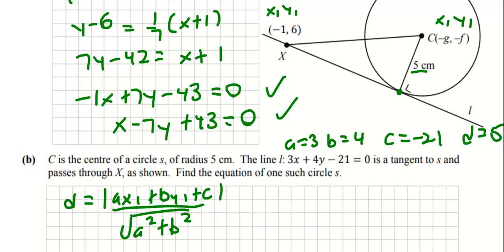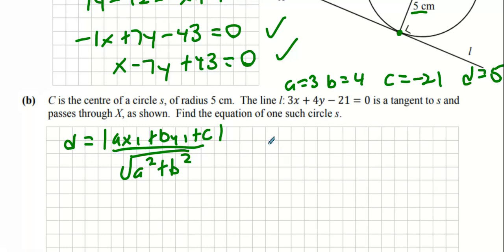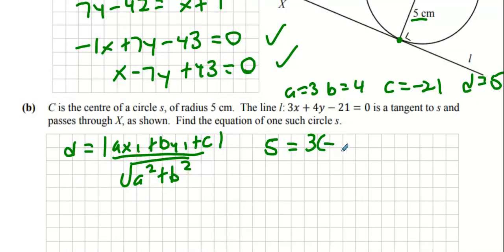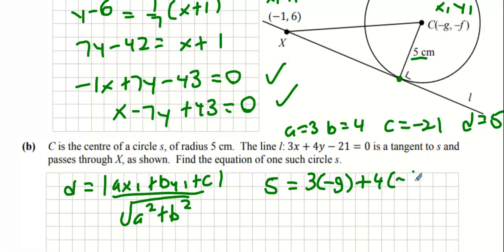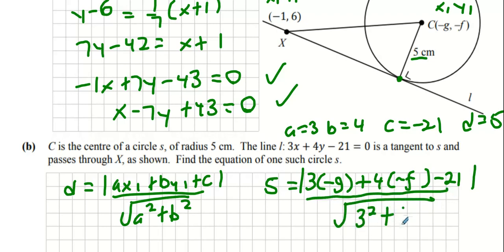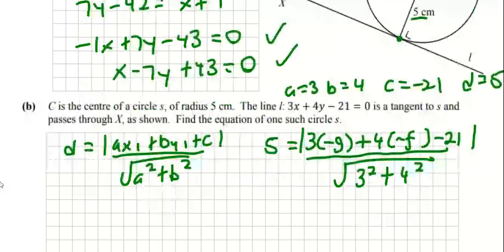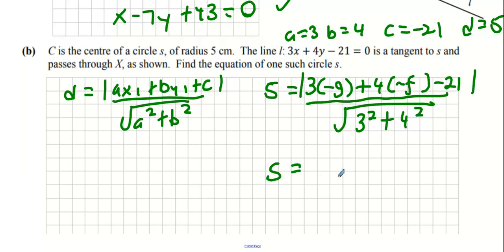So d is 5, and we get 3 times x₁ which is minus g, plus 4 times y₁ which is minus f, plus c which is minus 21 — taking the absolute value of all this — all over the square root of 3 squared plus 4 squared. That gives us 5 equals the absolute value of (minus 3g minus 4f minus 21) over 5.